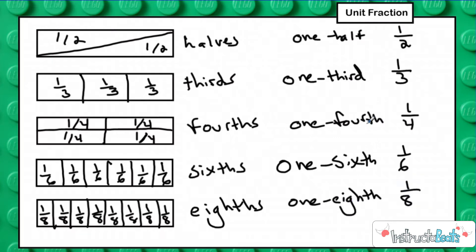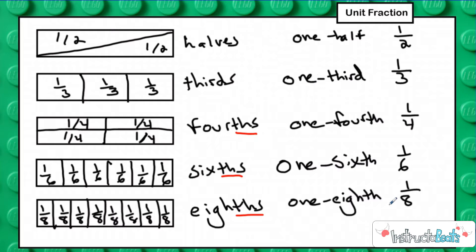If you notice, you're going to see a pattern right here. Most fractions — not halves or thirds — but most fractions end in a THS. So eight equal pieces, we call those eighths. That's what a fraction is, and that's how we represent one of those pieces, which we call a unit fraction.